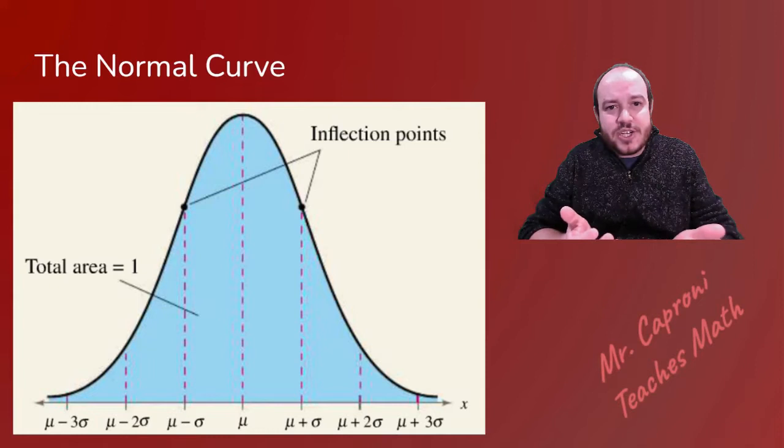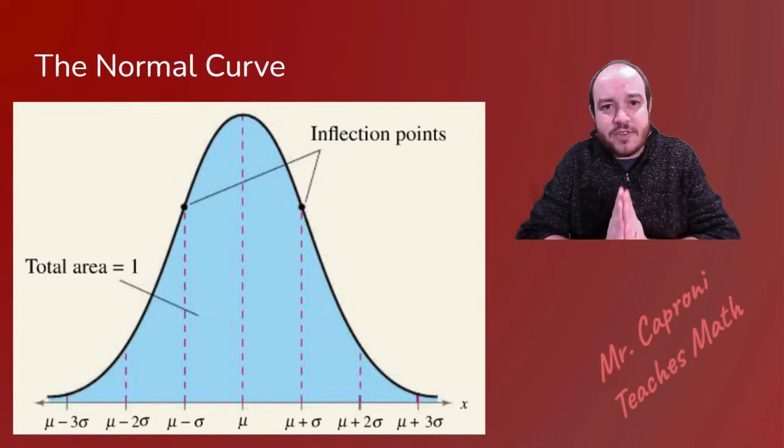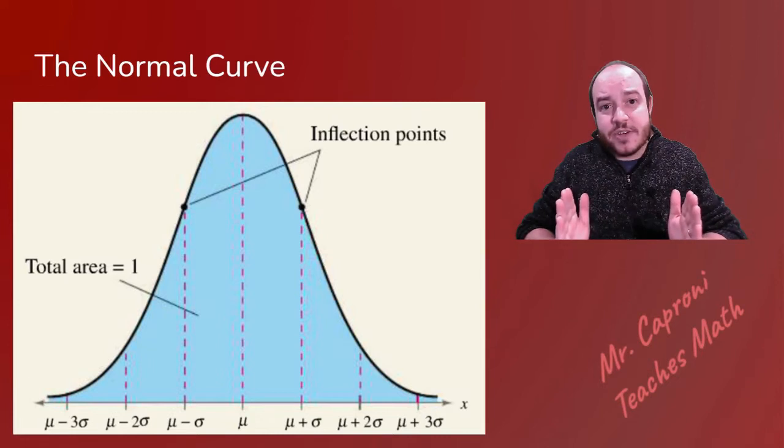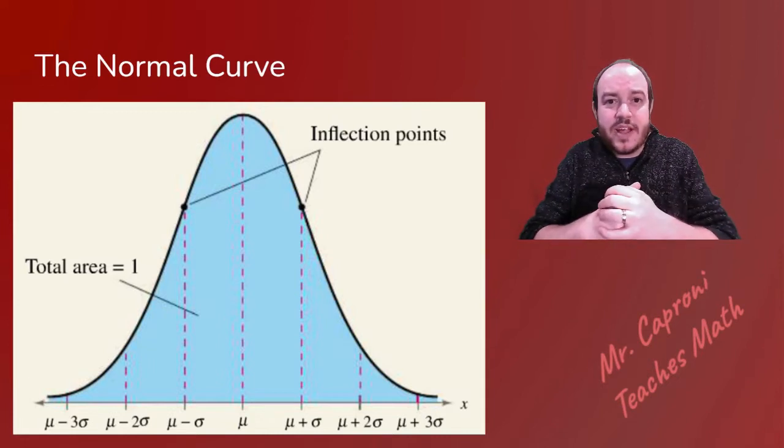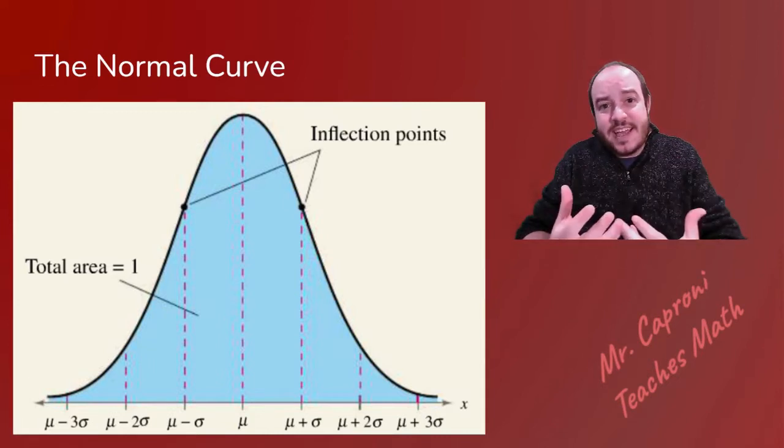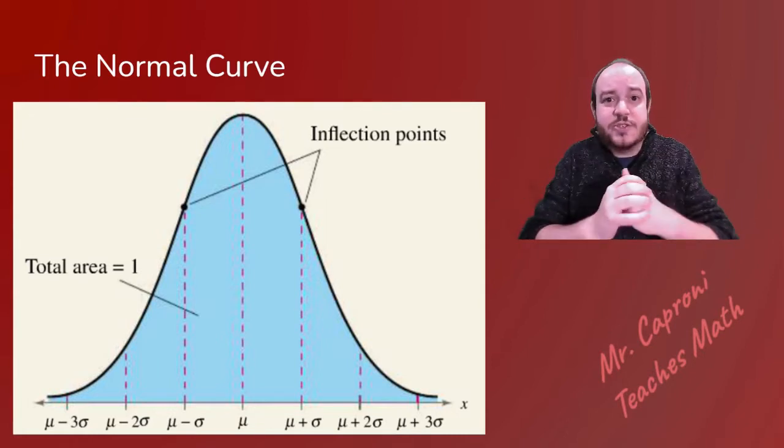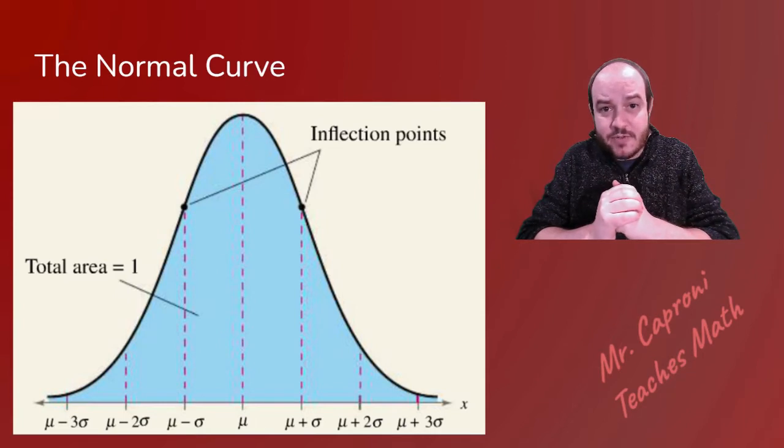Now remember, in the middle of that bell-shaped curve is your mean or your average of the situation. And as you get further away from that average, less and less people will fall in that range. So you'll notice if this were like a histogram, your high point is in the middle, and then it actually falls down as you drift further and further from the average.